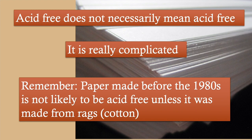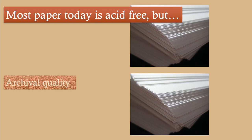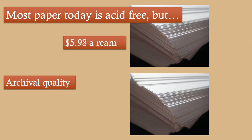A normal piece of paper you'd buy at your local store runs about five to six dollars a ream right now for a 500-page package. If you go to archival quality paper, it could cost over three times as much — about twenty dollars a ream. So there's a significant price difference between regular paper and archival quality paper that you need to bear in mind.